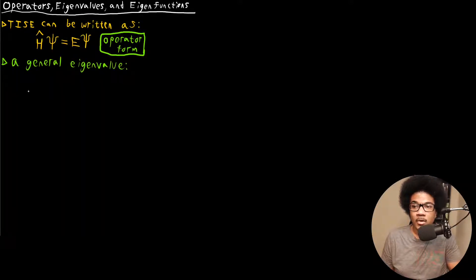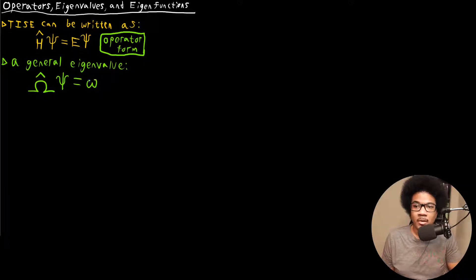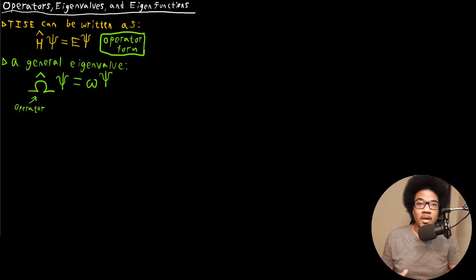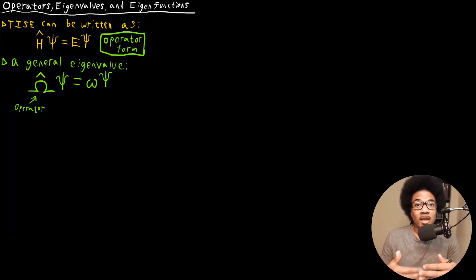In a general eigenvalue equation, you have some operator — I'll use the capital Greek letter omega-hat for the operator — operating on some function, and that gives you some constant (little omega) times that function back again. This omega-hat is our operator. An operator in mathematics is really just anything that's telling you to do something. In most cases in this class, that's going to be taking a derivative.